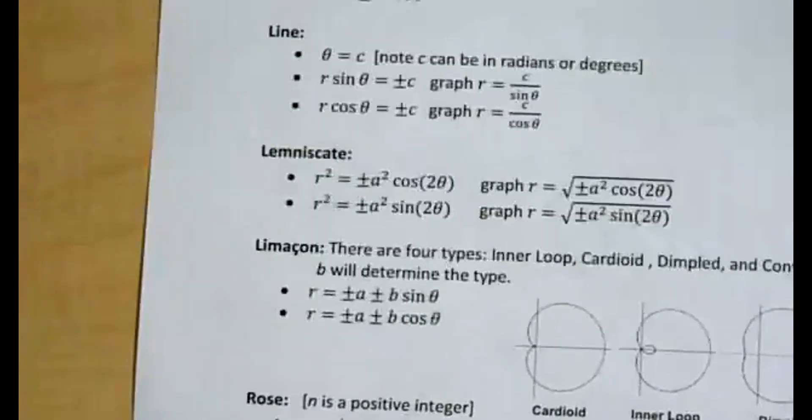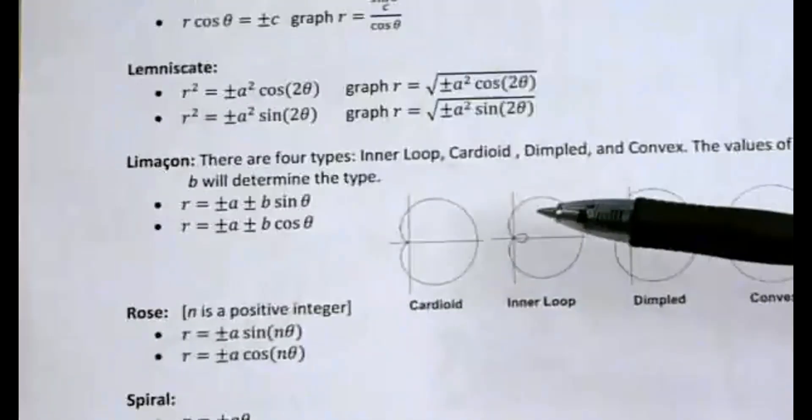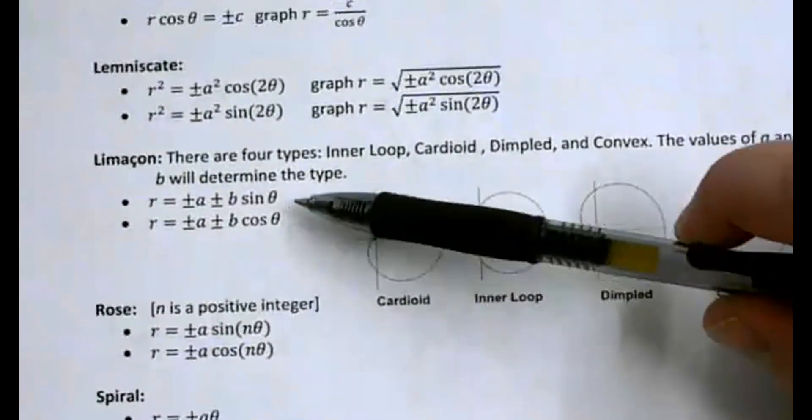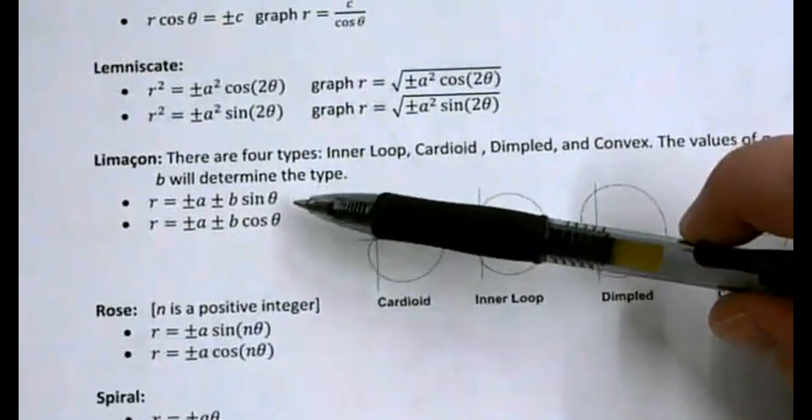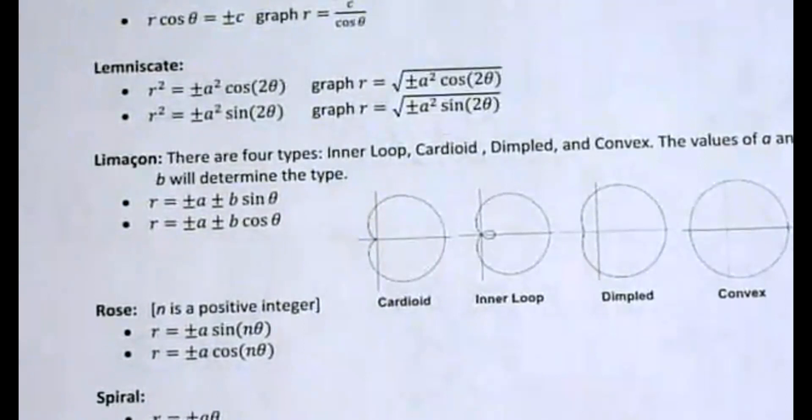So for example, let's say I've gone through and I've gotten down to, I'm going to give you the example of lemniscates. So I know that these equations look something like this. I'm going to go into Desmos.